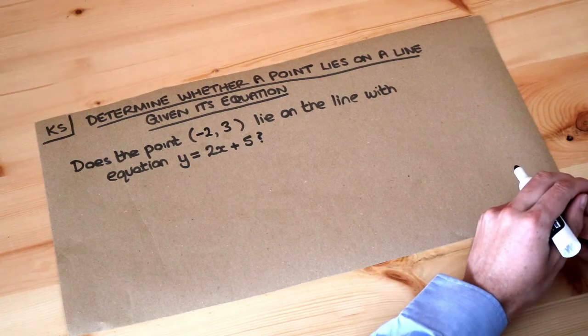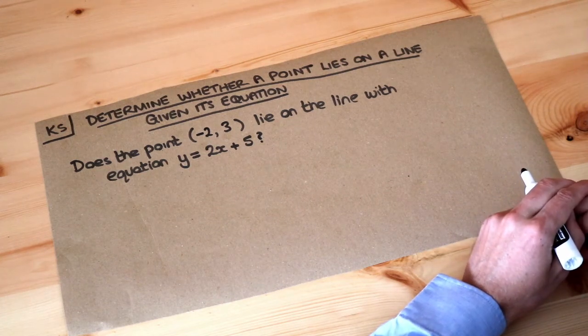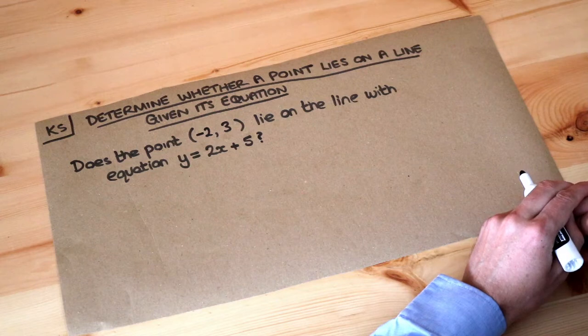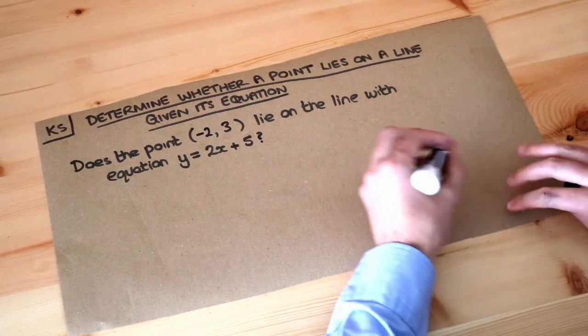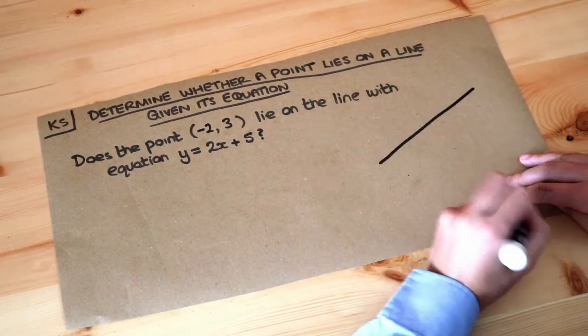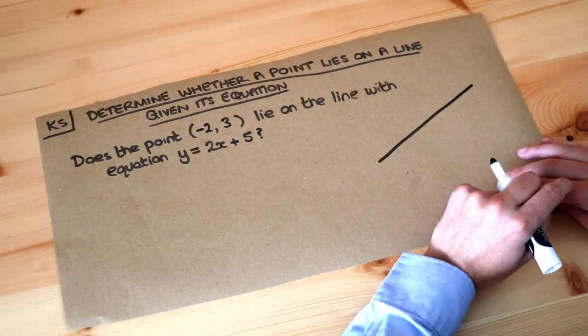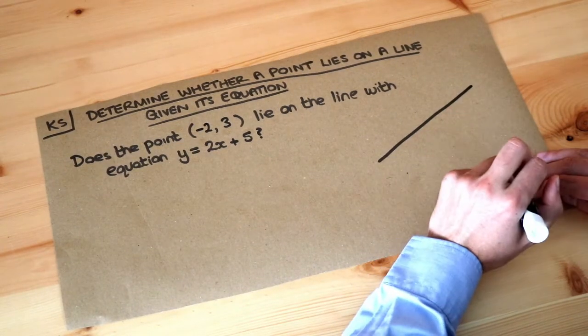Hello and welcome to this Dr. Ross-Math's key skill video on determining whether a point lies on a line given its equation. In previous videos I talked about how if you have a line and an equation for that line, the equation is like a membership rule.